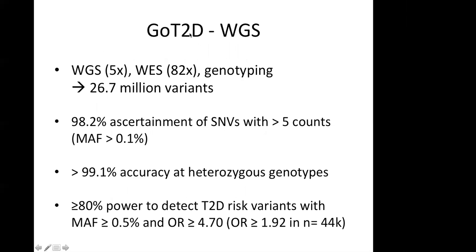The first whole genome sequencing approach was carried out in Europeans, and a joint analysis combining whole genome sequencing, whole exome sequencing, and genotyping arrays led to 26.7 million variants that were subsequently tested for association. Power and ascertainment estimates gave quite good results: there was near-complete ascertainment of single nucleotide variants with more than five counts, corresponding to a minor allele frequency above 0.1%.